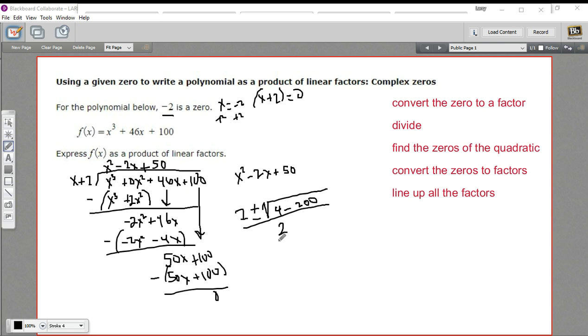All right. So let's see if we can do some simplification here. Two plus or minus the square root of negative 196 over two. And oh, well, 196 is the perfect square of 14. So 14 times 14 is 196.